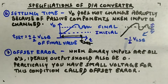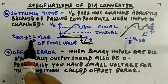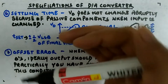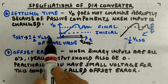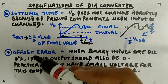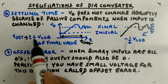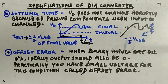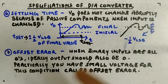So T_set is the time from when the input changes until the output settles within ±½ V_LSB of the final value. That parameter is given by the manufacturer in the datasheet for a particular digital-to-analog converter.